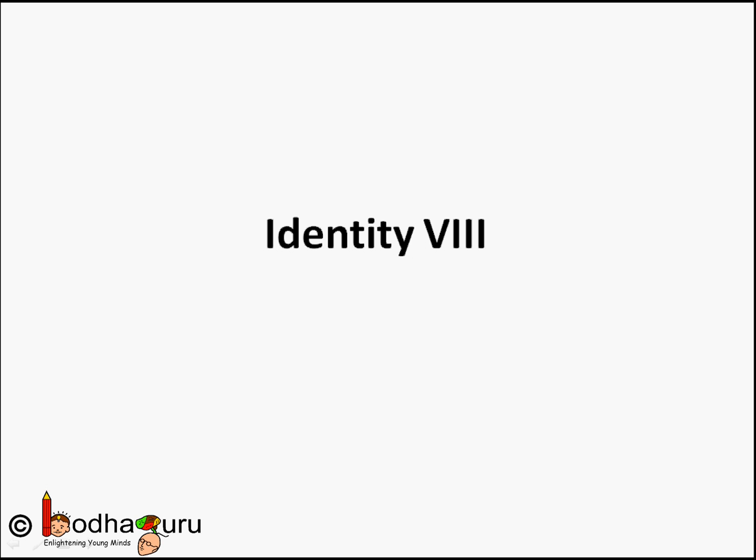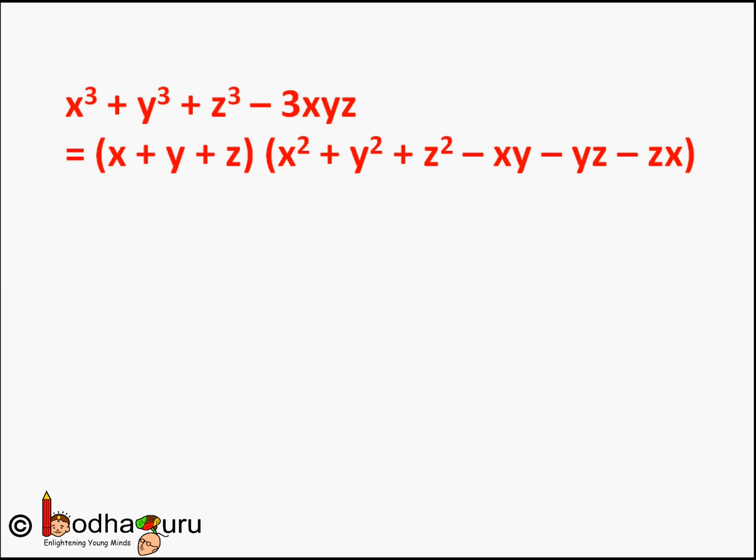Hello friends, in the last videos we learned about identities 5, 6, and 7 to simplify polynomials. Let us learn a new identity. This is Identity 8 and it is x³ + y³ + z³ - 3xyz equals the product of two factors: (x + y + z) and (x² + y² + z² - xy - yz - zx). Remember it has three variables: x, y, and z.